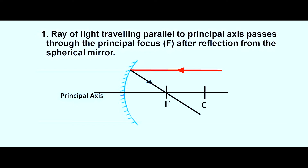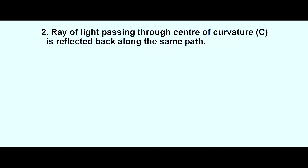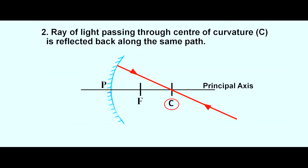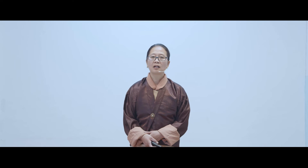The second rule: a ray of light passing through the center of curvature C is reflected back along the same path. In the diagram, the ray is passing through the center of curvature C, and after reflection it retraces the same path. This is another important ray for the construction of a ray diagram.